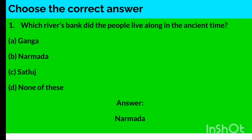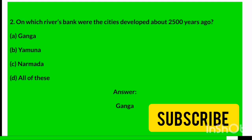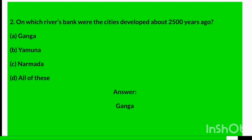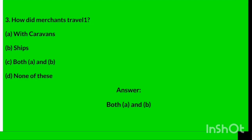Question two: On which river's bank were the cities developed about 2,500 years ago? Options are Ganga, Yamuna, Narmada, or All of these. The answer is Ganga — the cities were developed on the banks of river Ganga.